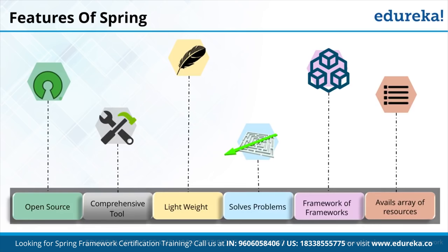After Inversion of Control, we have Dependency Injection. DI is about removing dependency from our code. Spring's DI technique makes our application easy to manage and, most importantly, makes the programming code loosely coupled. Dependency injection is resolved in Spring using two techniques: by constructor and by setter method. The key XML tags used are constructor-arg and property.